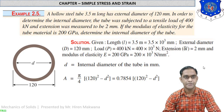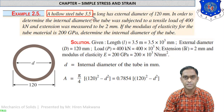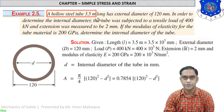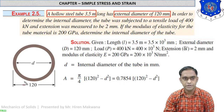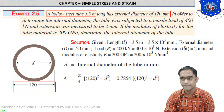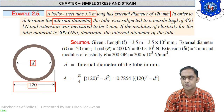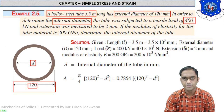Let us see example number 2.5. A hollow steel tube 3.5 meters long — so length is given as 3.5 meters — has an external diameter of 120 mm. You can see the cross-section of the steel tube in the figure. We have to determine the internal diameter; the external diameter is 120 mm.